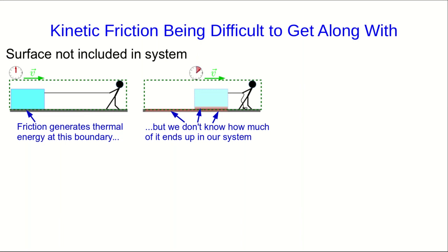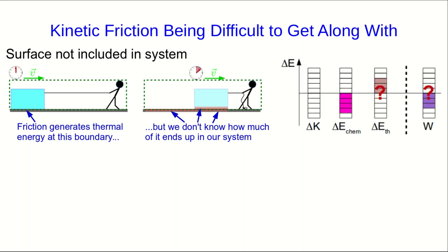Some of it is going to go to warming up the box and will be in our system, and some of it will warm up the floor and will be outside of our system. So our energy accounting is now quite difficult. We know the system gains thermal energy, but we don't know by how much. We know that that external kinetic friction force will do some amount of negative work, but without knowing how to calculate the change in thermal energy of the system, we have no way of calculating how much work has been done.